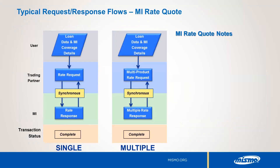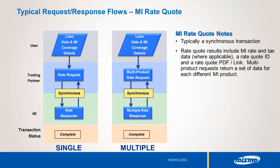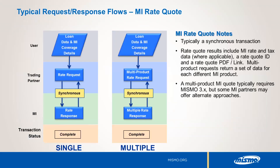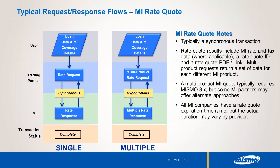Here are notes to remember about MISMO-based MI rate quotes. Rate quotes are typically synchronous transactions. Rate quote result data includes MI premium with tax data where applicable, a rate quote ID, and a rate quote PDF or link. Multi-product requests return a set of data for each MI product. Remember to check with your MI partner to determine if actual PDF files or links are returned. A multi-product MI quote typically requires the MISMO 3.x format, but some MI partners may offer alternate approaches. All MI rate quotes have expiration dates, but the actual duration may vary by MI provider. Most trading partner systems retain a history of rate quote result data for user reference.